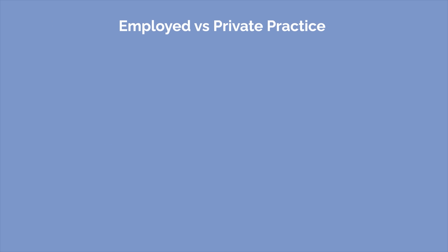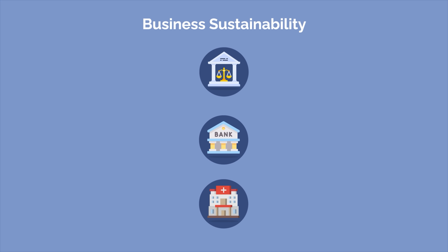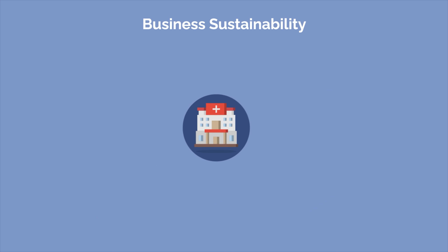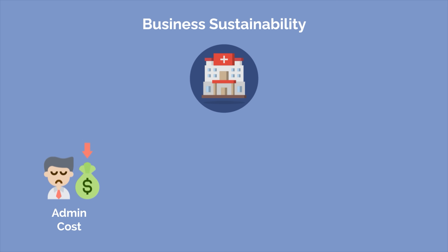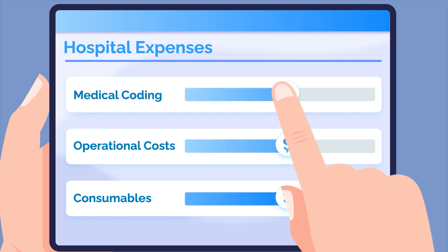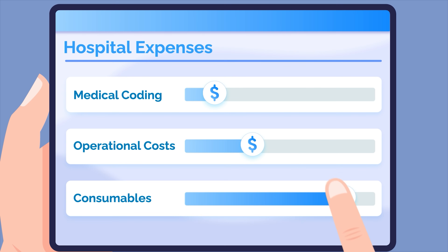Looking at employed physicians vs. doctors in private practice: physicians in private practice generally make more money. In 2022, self-employed physicians reported average earnings of $385,000, whereas employed physicians reported $320,000. The most obvious reason is that employees in any business aren't paid their true value — hospitals must pay employees less than their true value to account for administrative costs, overhead, operations, and profit. Additionally, as a business owner, you can increase revenue by optimizing your medical coding and reducing operating costs.